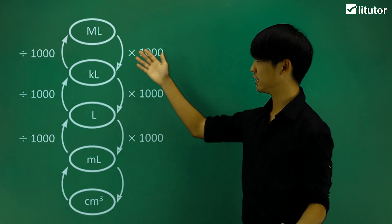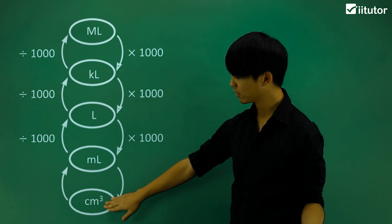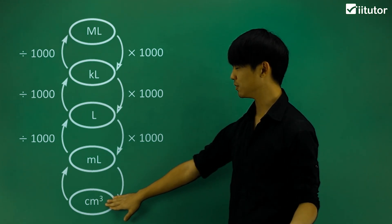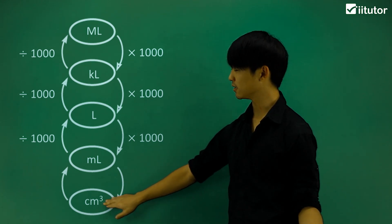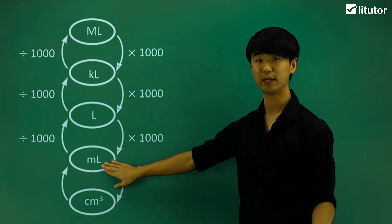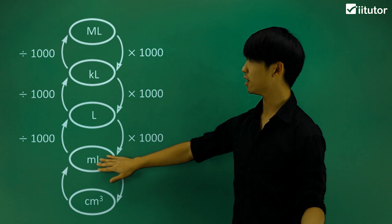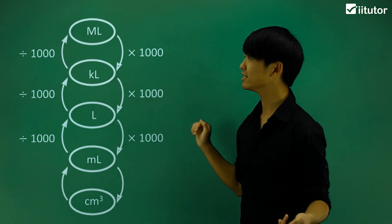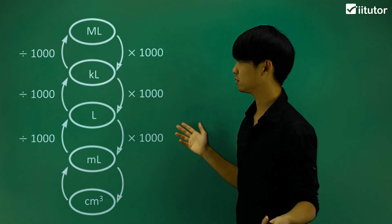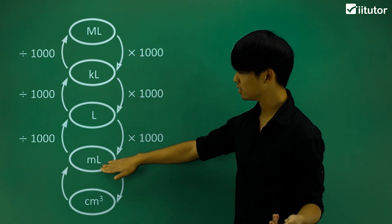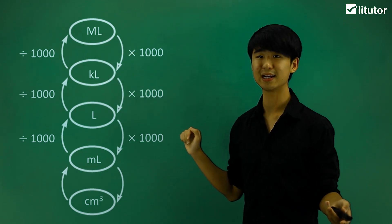We have a nice conversion here between all the capacities. At the very bottom we have centimeters cubed, which is a form of volume — and it's very handy because centimeters cubed is equivalent to just one milliliter, which is a unit of capacity. These are all the different types of capacities, and we can interchange between them by scales of 1,000. Going through all the terms: milliliter, liters, kiloliters, and finally megaliters.